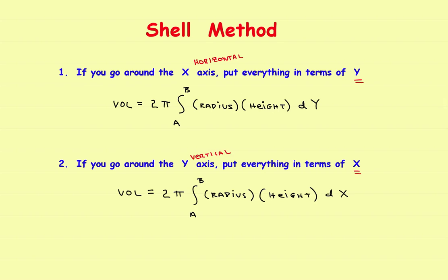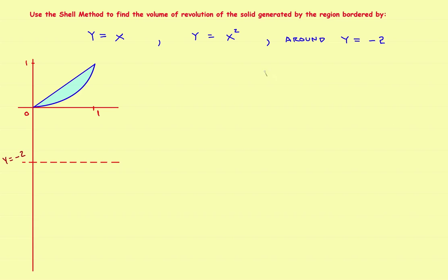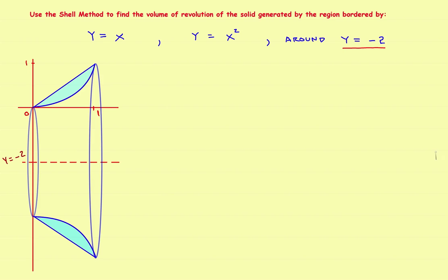Let's take a look at the problem. We have the line y equals x as a straight line, and y equals x squared as a curved line. We want to use the Shell Method to find the volume of revolution of the solid generated by the region between them. We take this shaded area and roll it around the line y equals negative 2, which is this dotted line down here. The resulting solid would look something like this.